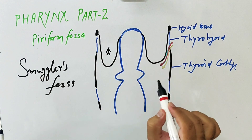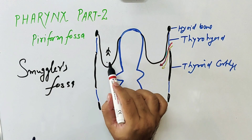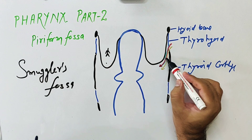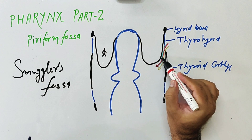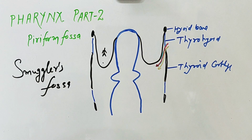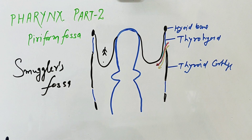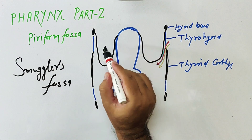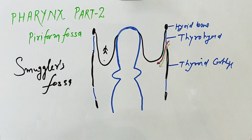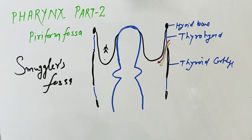An important clinical point: sometimes during eating, a fish bone or a safety pin may lodge in the piriform fossa. During removal, there is a risk of damage to the internal laryngeal nerve. This is the clinical importance of the piriform fossa. Sometimes a laryngeal pharyngeal tumor grows in this fossa and mostly remains asymptomatic before metastasis.